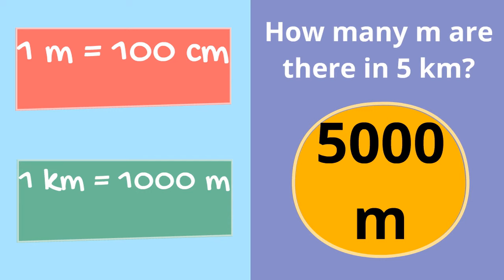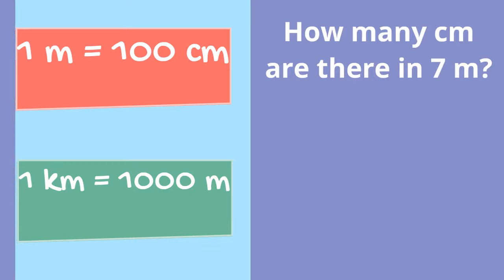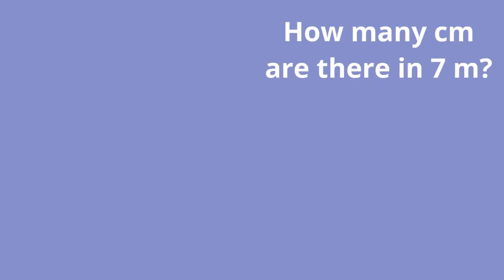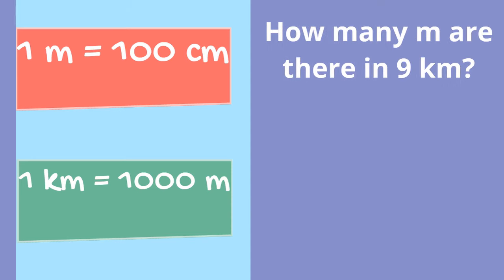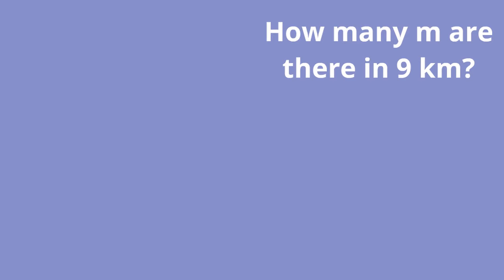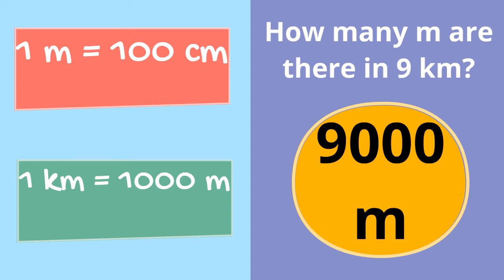I'm going to make it a little bit harder now and get rid of the facts on the side as a helper. If you think you're going to need them, maybe write them down on a piece of paper before going into the next ones. How many centimetres are there in seven metres? Pause the video and write down an answer. The answer is seven hundred centimetres. Next question: how many metres are there in nine kilometres? Pause the video and write down an answer. The answer is nine thousand metres.